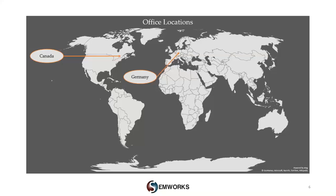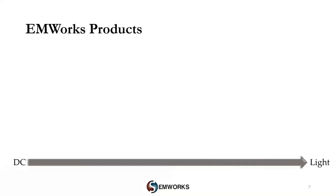As you can see on the screen, we have two office locations. Our headquarters is in Montreal, Canada, and we have another office in Germany. We offer four products with various add-ons covering a wide frequency range. Our first product, EMS, is used for electric and magnetic field modeling for low frequency applications. It covers many applications like insulators, cables, bus bars, permanent magnets, circuit breakers, transformers, and electrical machines.